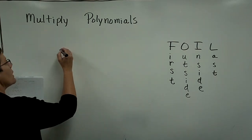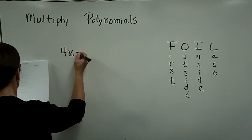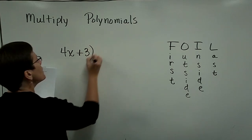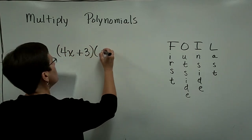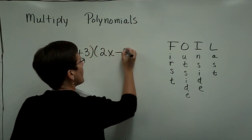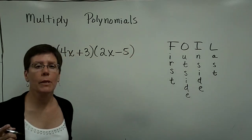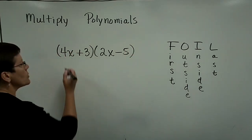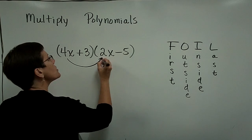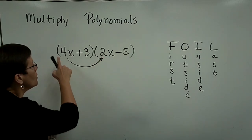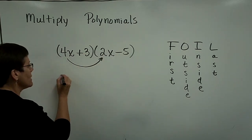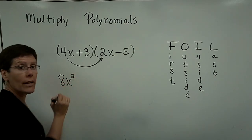Let's do one where the first terms in the binomials have coefficients other than 1 like that 4 and that's 2x. So I ask you to multiply these two binomials. So you'll FOIL. You'll multiply the first terms together. So 4x times 2x is 8x squared.